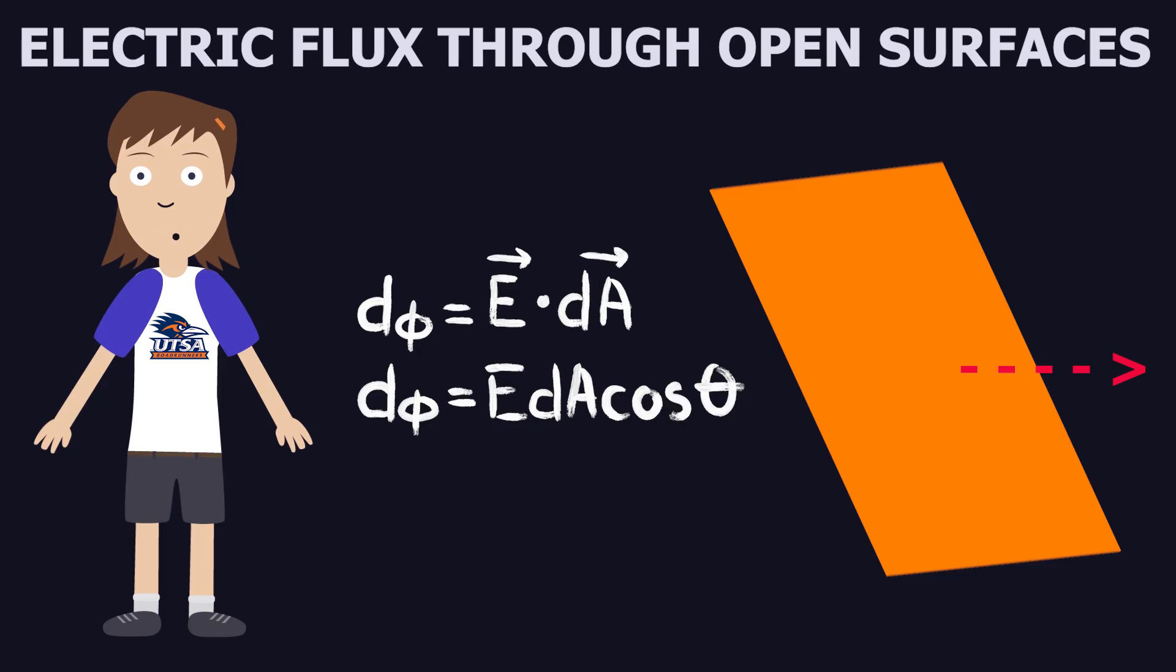The formula for the electric flux through an open surface is dΦ equals E dot dA, or dΦ equals E dA cosine theta.